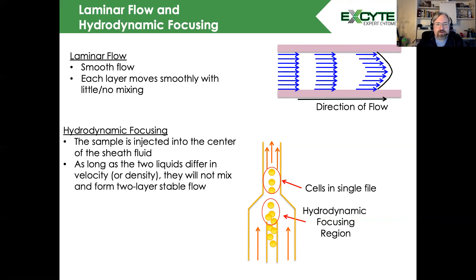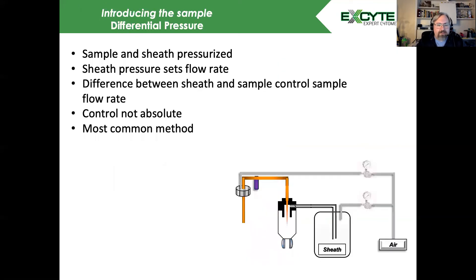There's a couple of ways we can generate this. The most common is a differential pressure system. Here we have our sheath fluid and an air compressor. You'll see we have two different valves that we're going to adjust. The first one sets the sheath fluid pressure, and we see the sheath fluid running here into our flow cell.